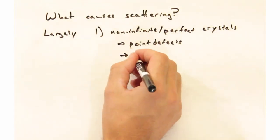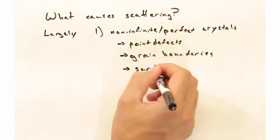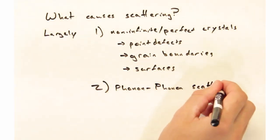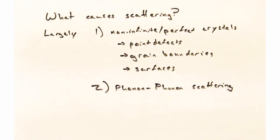Largely, we can break it down into two components. The first is that we're not working with infinite crystals, nor are they absolutely perfect. In practice, you have point defects, you have grain boundaries, and you have surfaces. Second, once you move outside of the harmonic approximation, phonons are able to interact with other phonons and scatter off of them. At high temperatures, where you have a high density of phonons, you would correctly expect that phonon-phonon scattering could be a big deal.